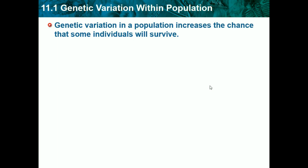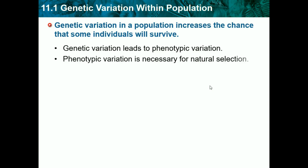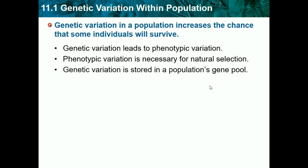If a natural disaster happens, there is still a probability that some will survive due to their special uniqueness. Genetic variation leads to phenotypic variation — it leads to differences in how we look and how our physical abilities are. Phenotypic variation is necessary for natural selection. Genetic variation is stored in a population's gene pool.